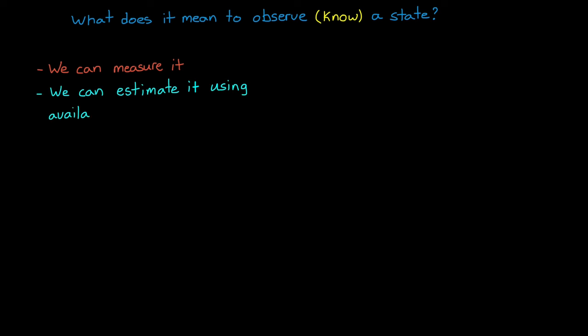Okay, let's now focus on what it means to observe a state. Clearly, directly measuring a state is one way of knowing it. However, we don't have to measure every state to infer its value. Being able to estimate a state using available information is good enough to claim that the system is observable.